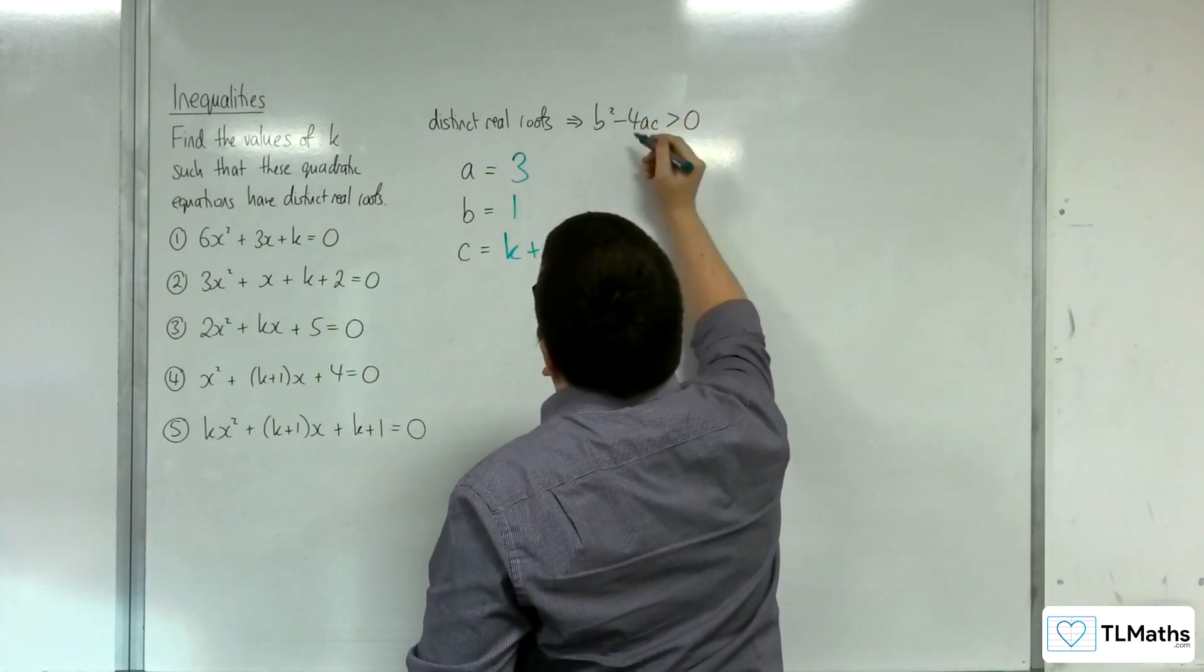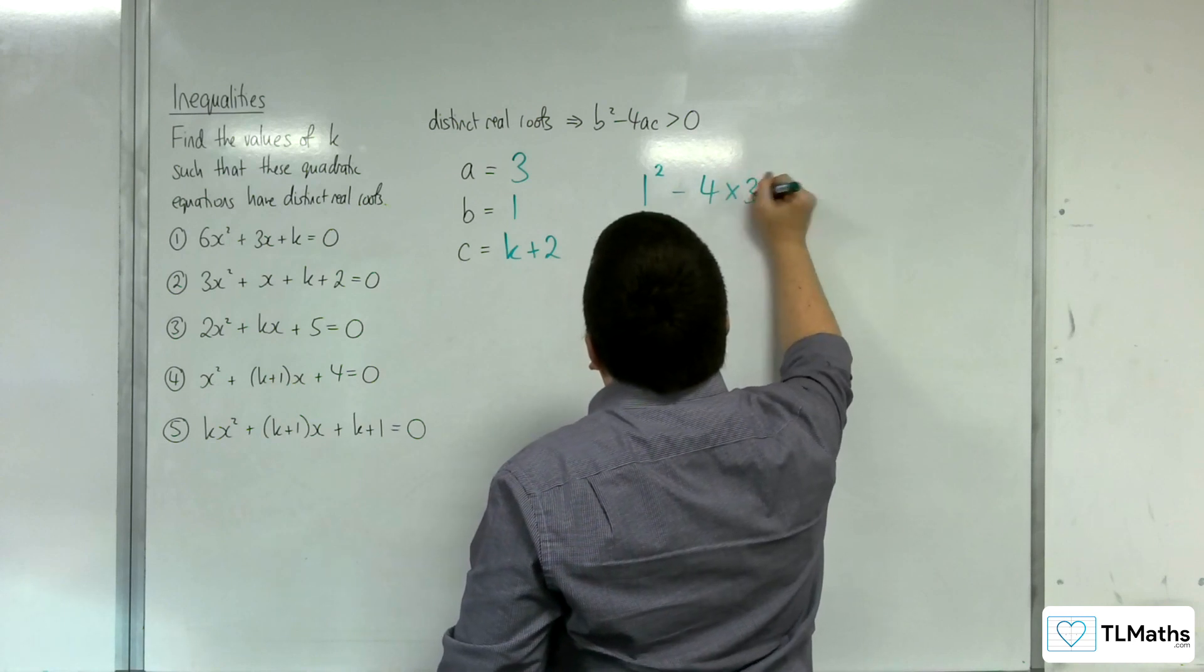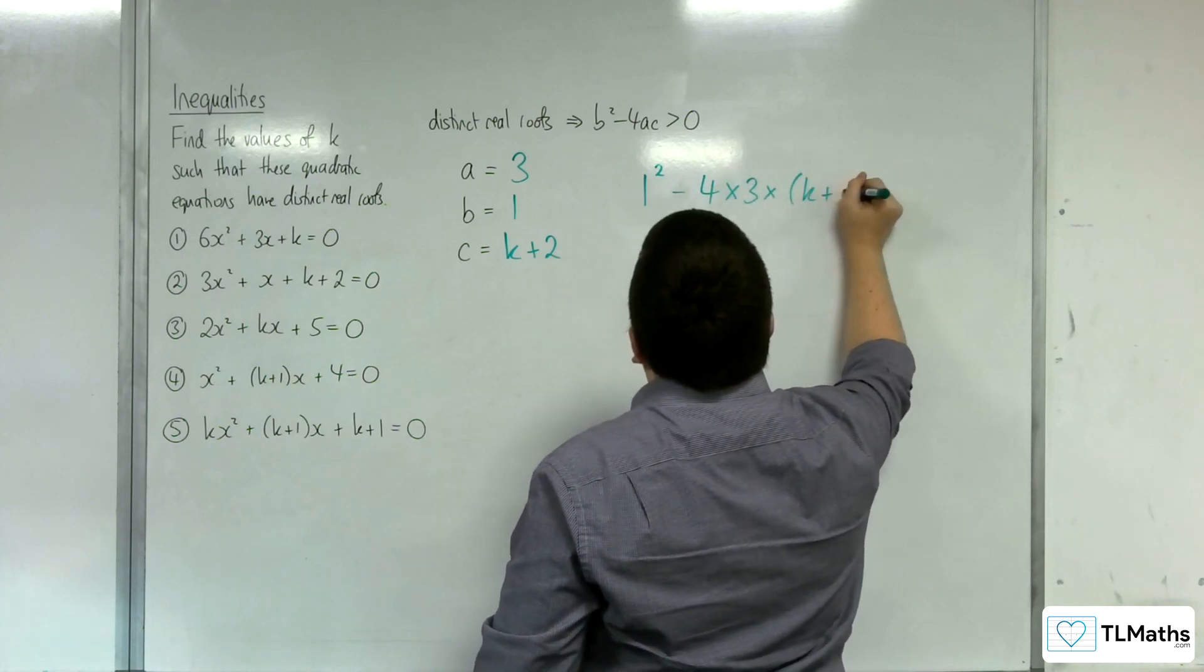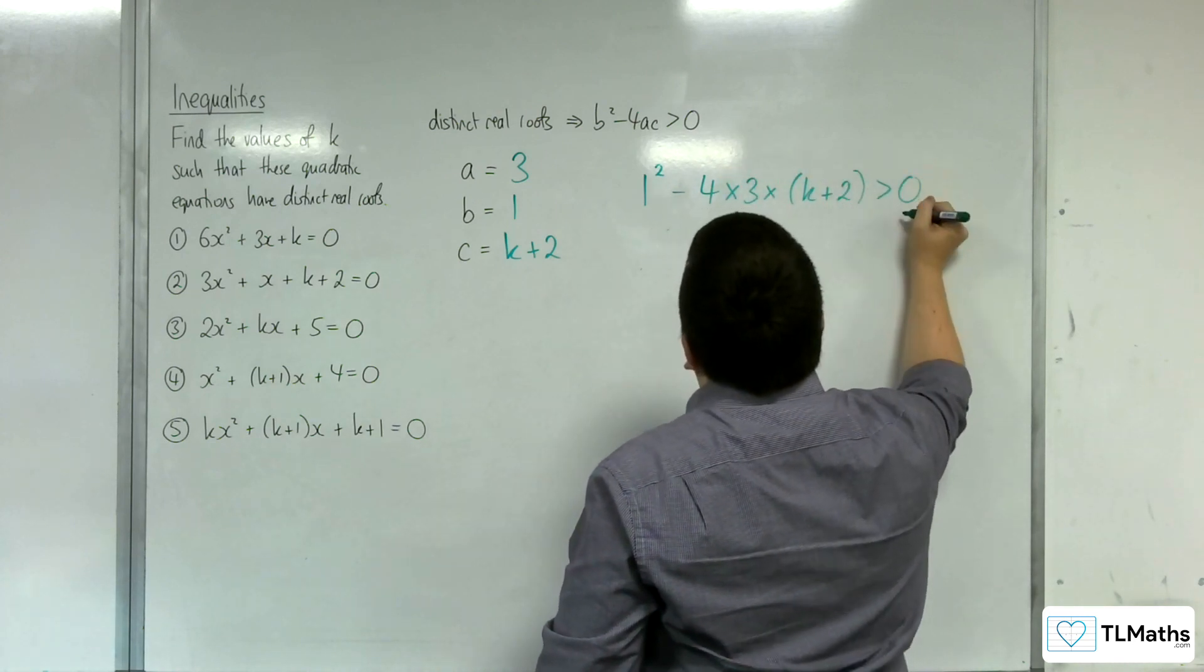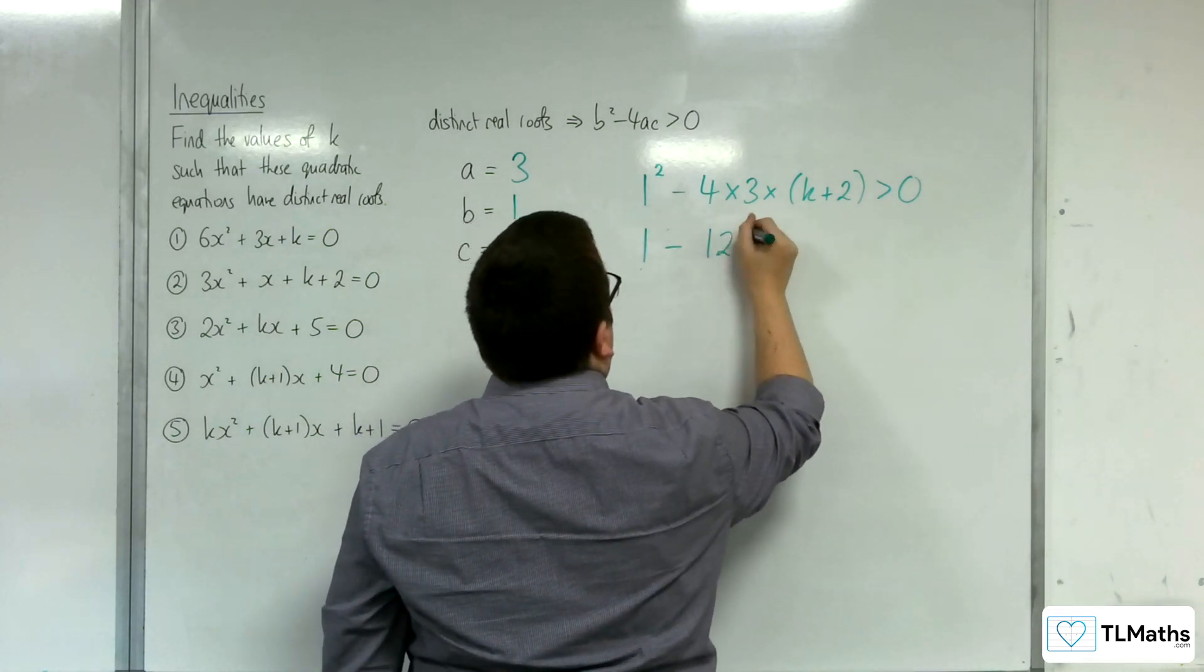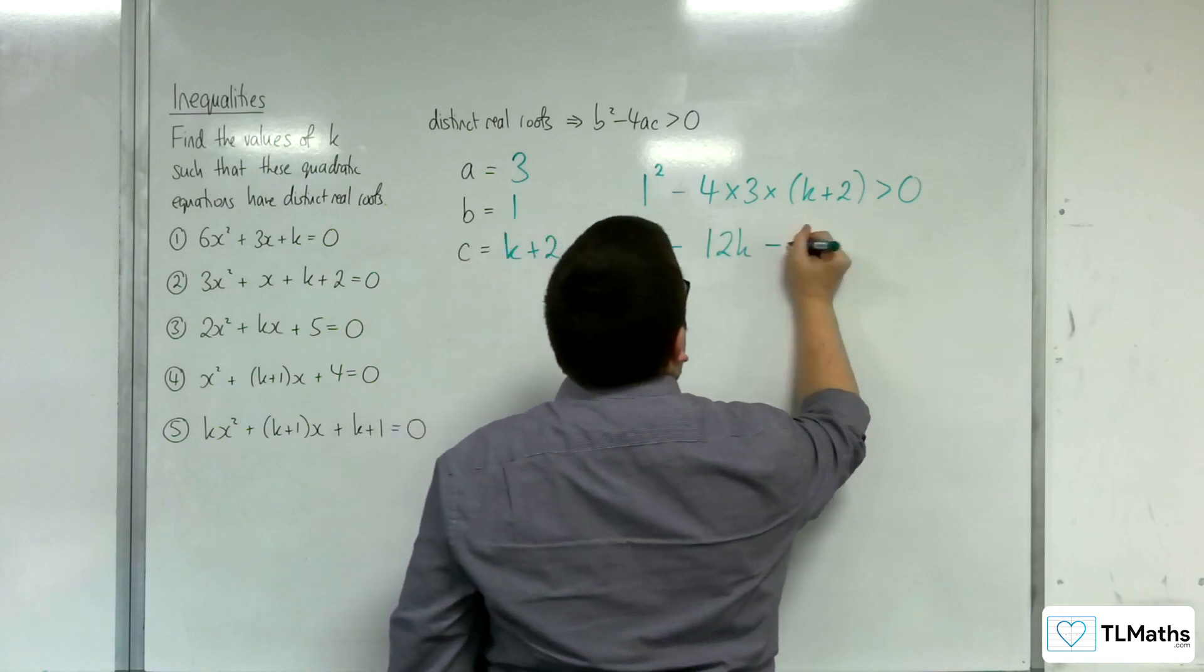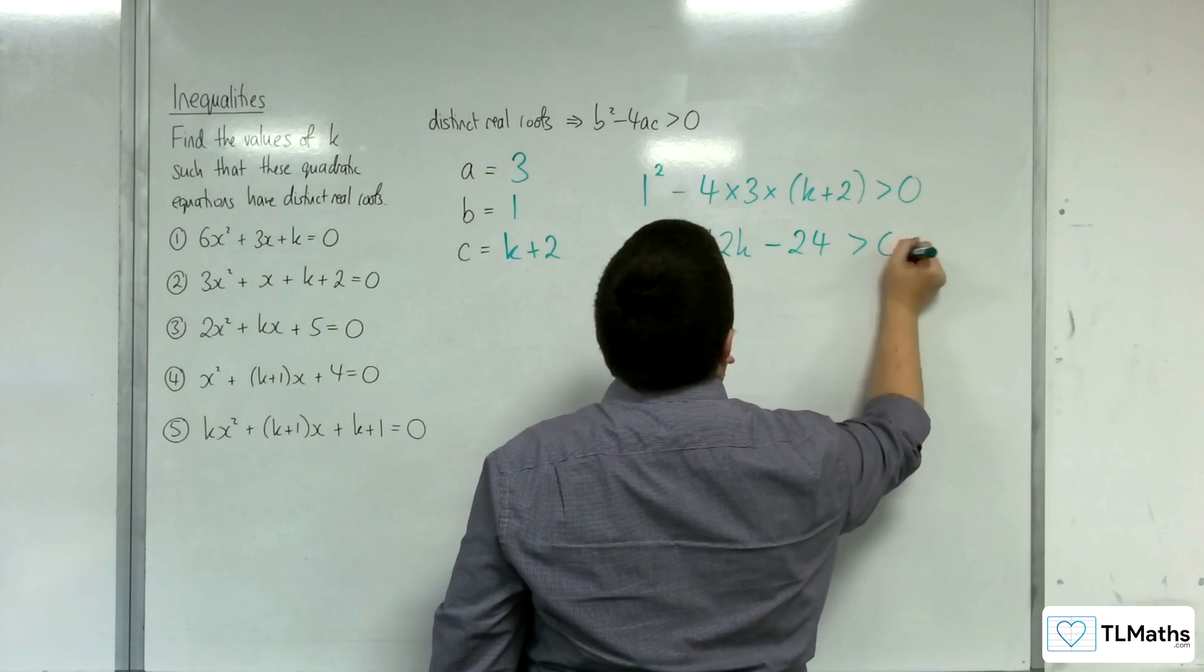Substituting in, b squared, take away 4 lots of a times c. We have 1, take away 4 lots of 3 is 12, so 12k. And then we've got 12 lots of 2, so that's 24. So, take away 24 is greater than 0.